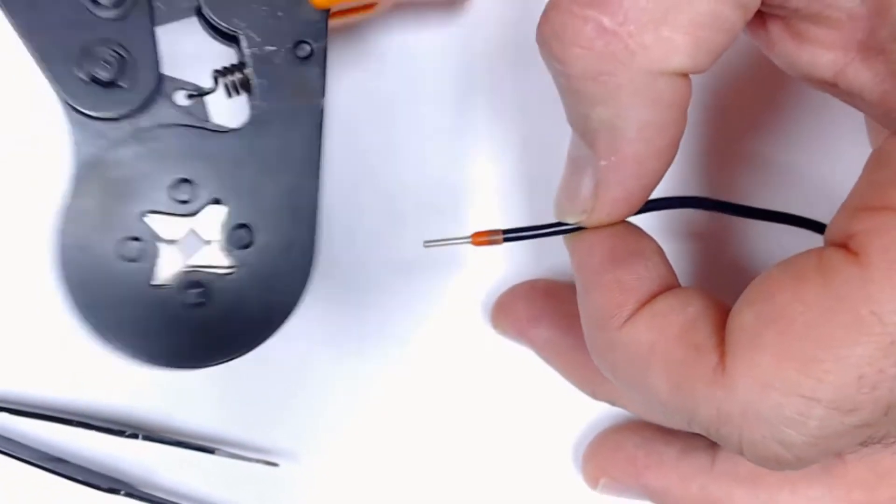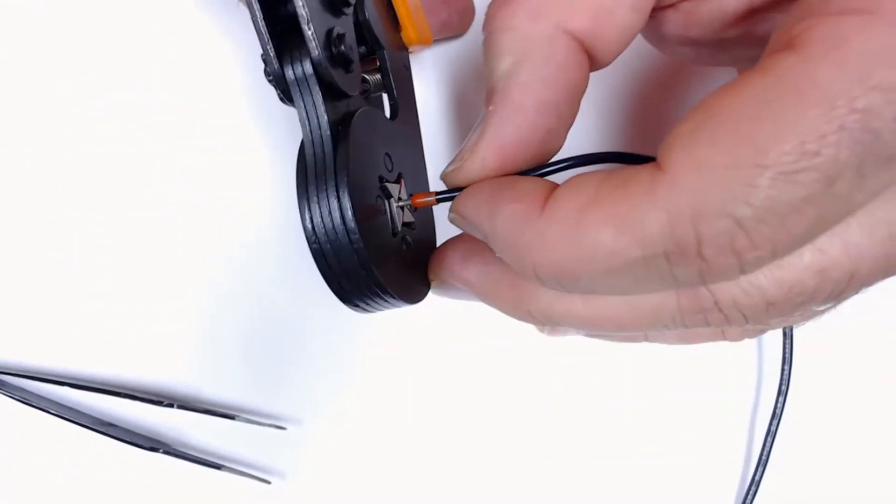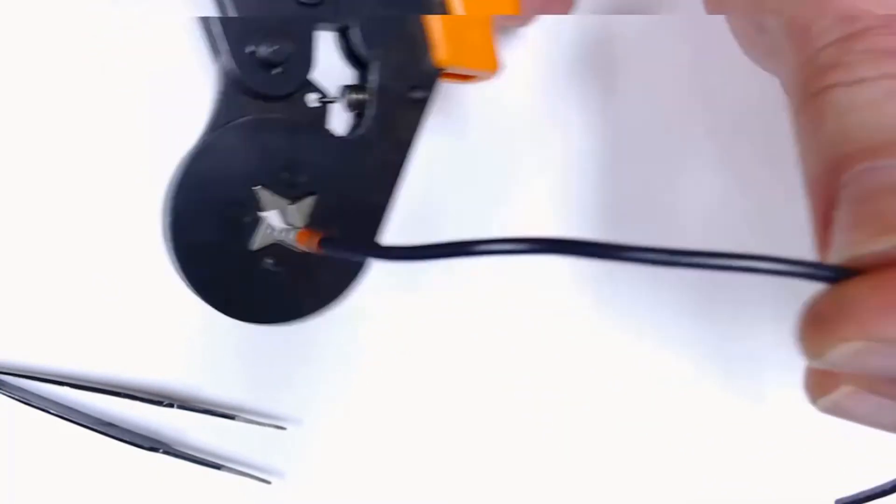Now that we're in place, we're going to crimp this using our four-sided crimper. It just inserts into the crimper, and then you give it a good squeeze. And that's it.